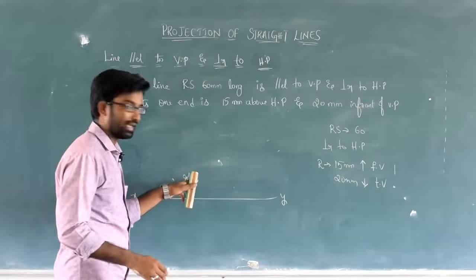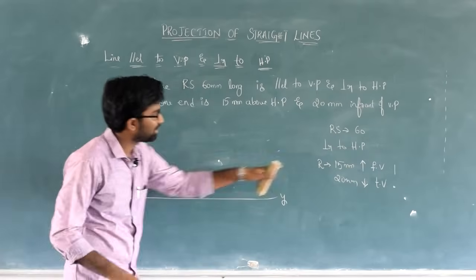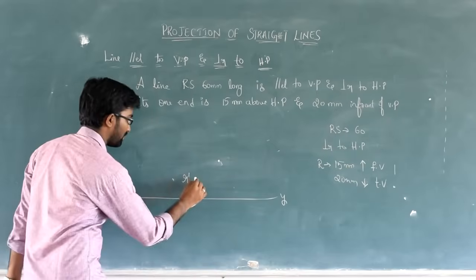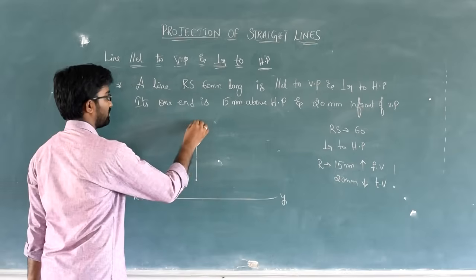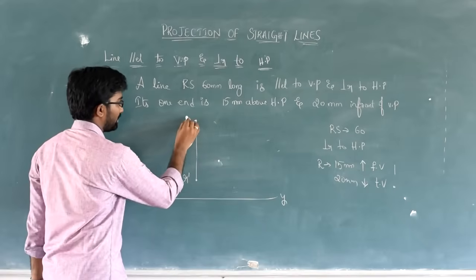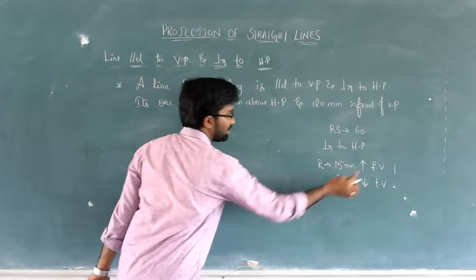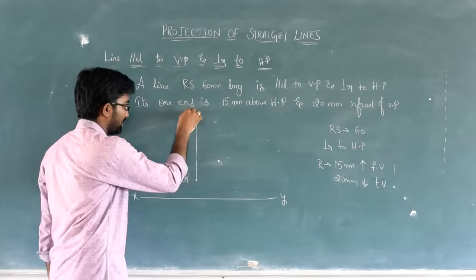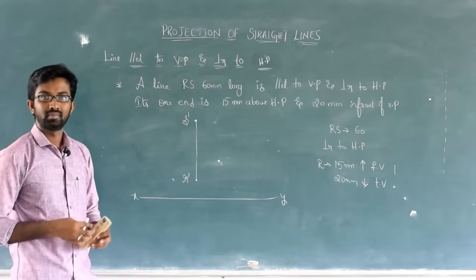Okay, draw reference line X and Y. Next, start from front view first, because front view shows line. This line is above, how many mm? 15 mm. So, from reference line 15 mm up, put one point R. So, small letter, r dash. It is front view.